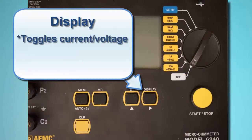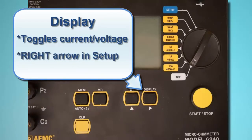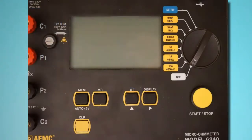Display toggles between displaying current measurements and voltage measurements. This button also functions as a right arrow in user configurable screens.